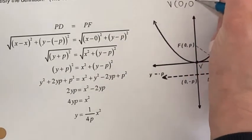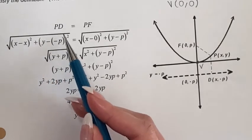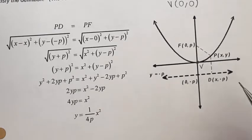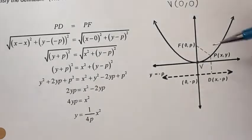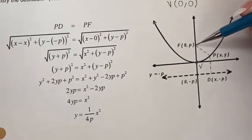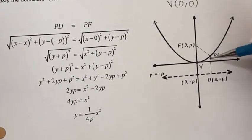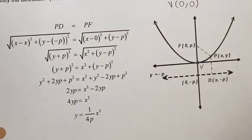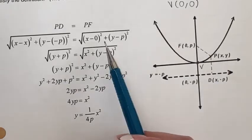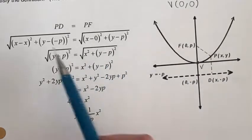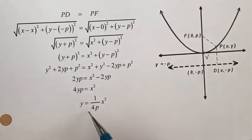With vertex at the origin, you use the distance formula for PD and PF. PD is the distance from the point to the directrix, and PF is the distance from the point to the focus. Setting these equal — substituting (0, p) for the focus — and working through the computation gives us what we call the vertex form of a parabola centered at the origin.